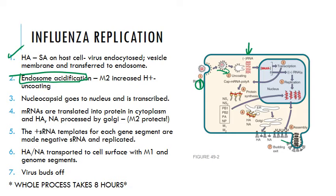Acidification causes the HA to bend over, leading the viral envelope to fuse with the endosome membrane — one of the jobs of hemagglutinin. This whole process is facilitated by the protein M2, an ion channel found on the virus. M2 promotes acidification of the envelope contents, breaking the interaction between M2 and the various NPs, which allows for uncoating and delivery of the nucleocapsids into the cytoplasm.